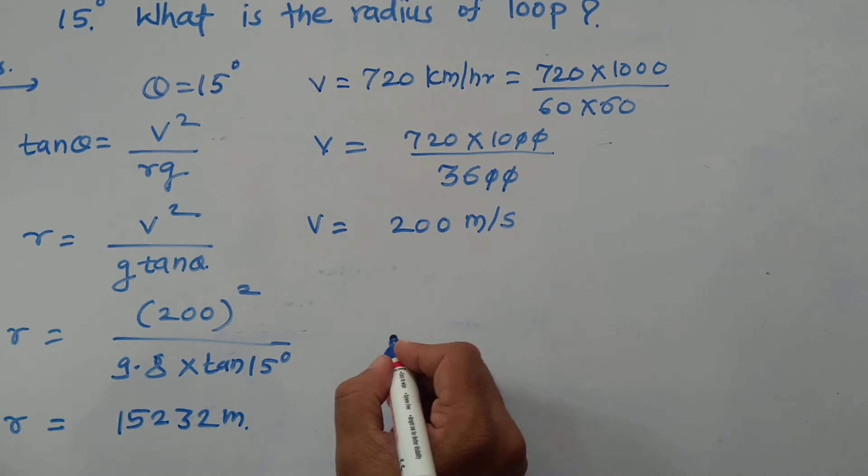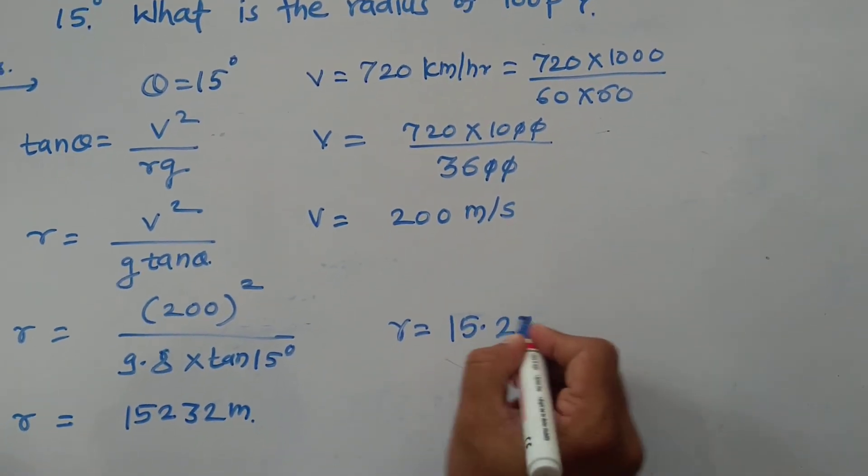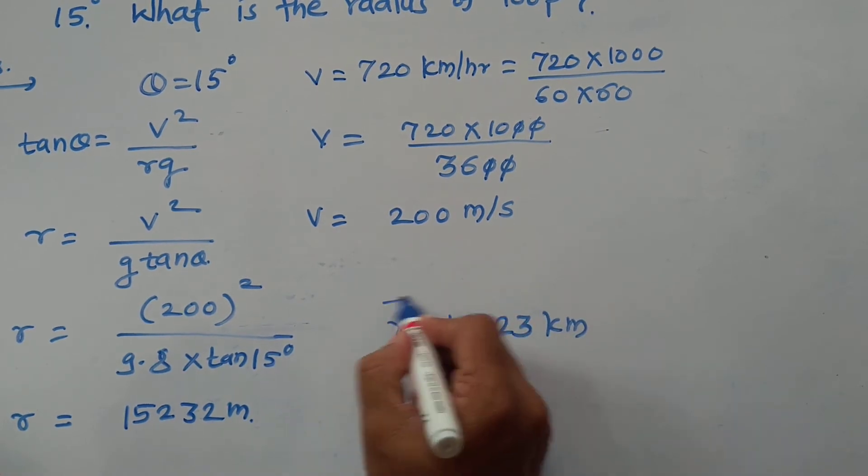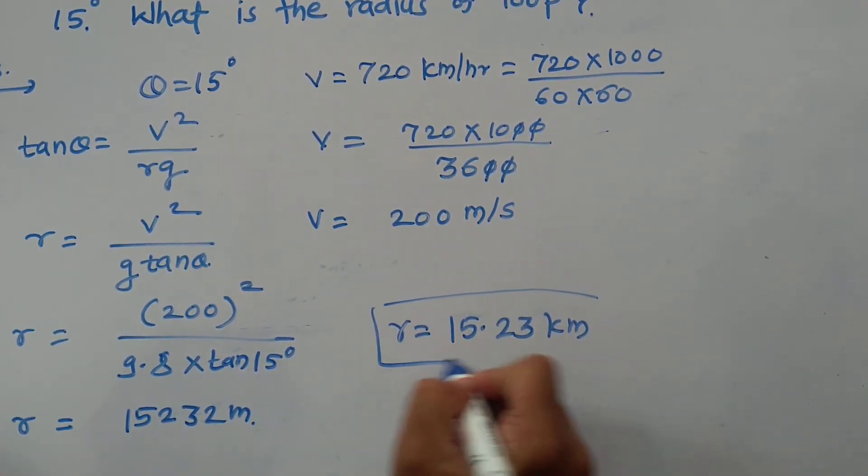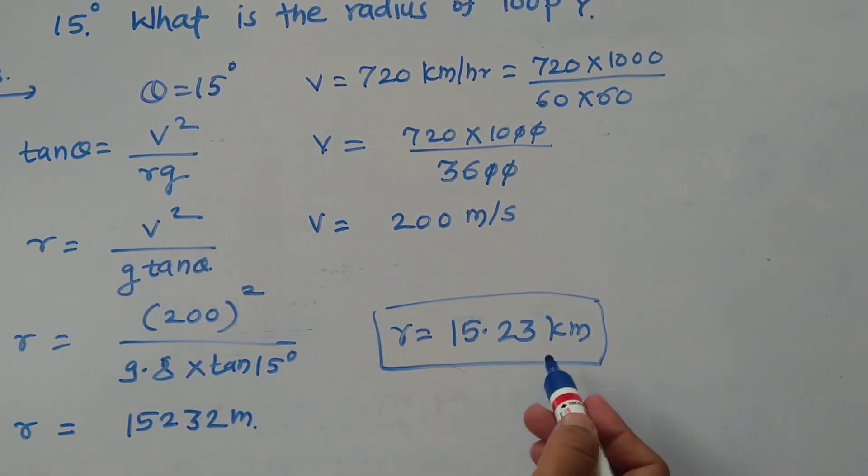In terms of kilometers, R is equal to 15.23 km. That is, the radius of that loop is 15.23 km.